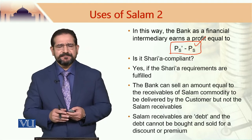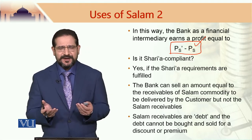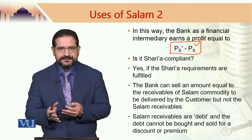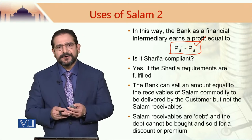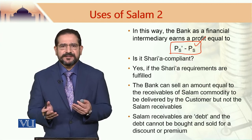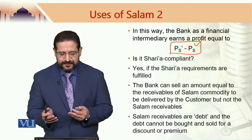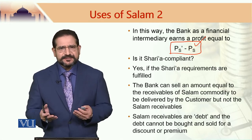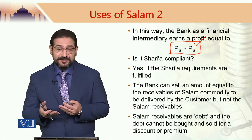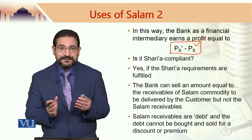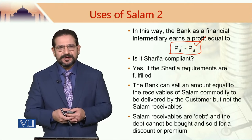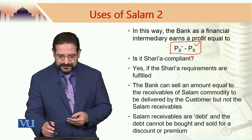The question arises: in this case, the bank is doing nothing in a way — it is buying a commodity on a salam basis and then selling it on to a third party without necessarily having to do anything substantial. Is it Sharia compliant? Of course this is Sharia compliant. This is called trade. In all trades, traders buy for a lower price and sell for a higher price. This is exactly what the bank is doing in this case. Hence, this is Sharia compliant.